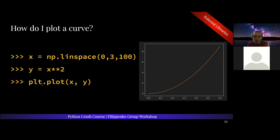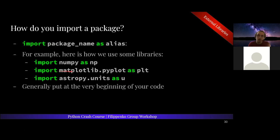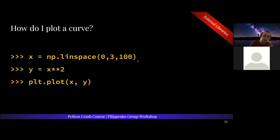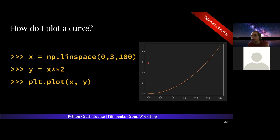So then if you want to actually plot this value, you use PLT — which is just matplotlib.pyplot imported as PLT — and use the plot function. PLT.plot takes X and Y, where X is the independent variable and Y is the dependent variable — both defined above. When you run this, it gives you a really pretty plot of the quadratic curve.